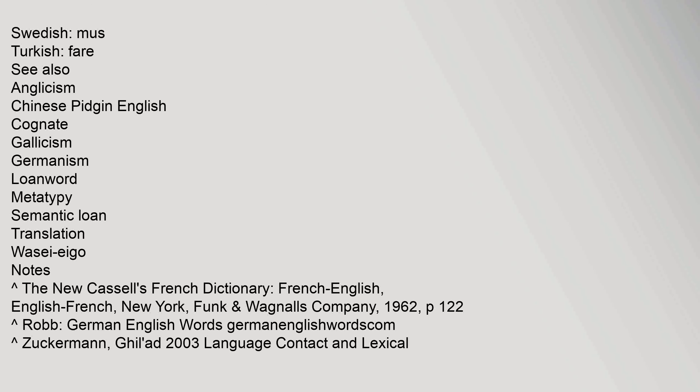Semantic calc — mouse: Swedish, mus; Turkish, fare. See also: Anglicism, Chinese Pidgin English, Cognate, Gallicism, Germanism, Loanword, Metatypy, Semantic loan, Translation, Whorfian hypothesis.